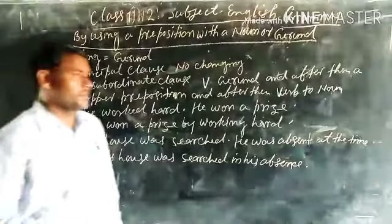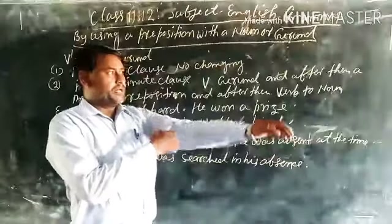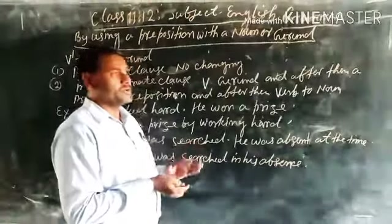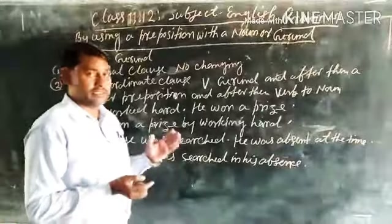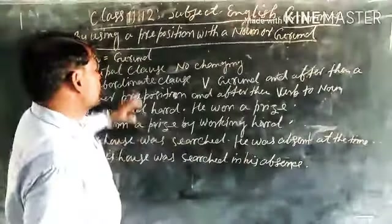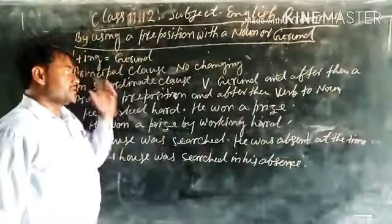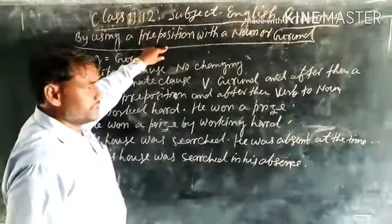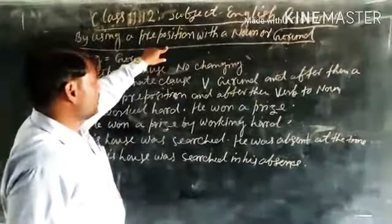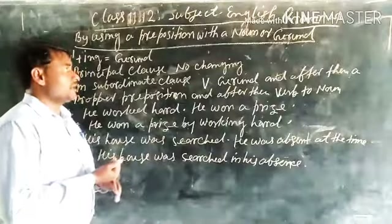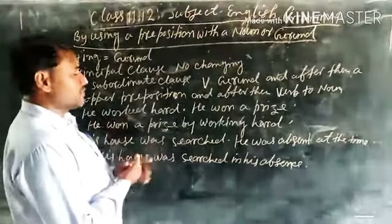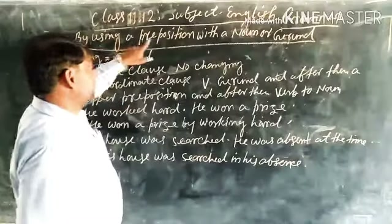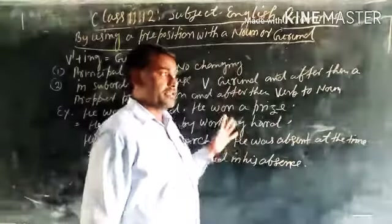Hi, dear student. Before this, you have read about simple sentences — how to add two simple sentences into one simple sentence according to synthesis. You have read about synthesis using a participle, then infinitive, then nominative absolute. Today I will tell you how to add two or more simple sentences into one simple sentence by using a preposition with a noun or a gerund.